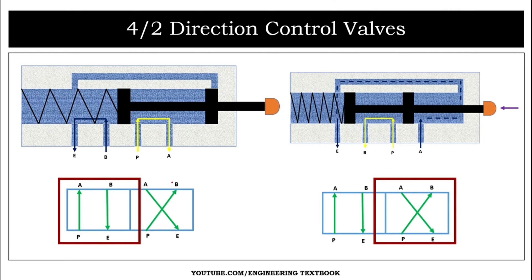In the symbol, position one shows port A connected to port P and port B connected to port E. In position two, when the push button is pressed, port A gets connected to port E and port P gets connected to port B. Both positions always have ports connected to each other — the ports are never blocked in this valve; they are always connected to their respective ports.